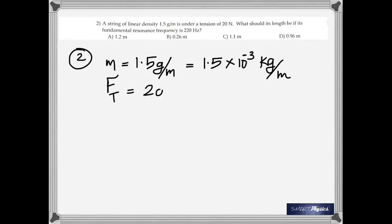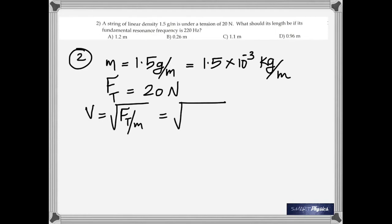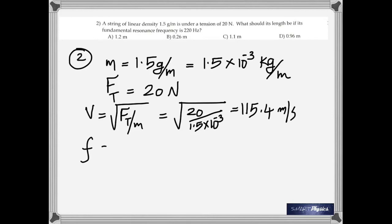The tension is 20 newtons. We know that velocity is given by the square root of T divided by mu (tension divided by linear mass density). When you take the square root, you get 115.4 meters per second. The fundamental frequency is V divided by 2 times the length.